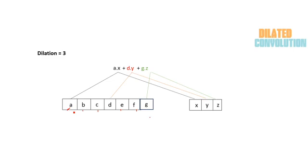Now we can see the key difference between normal convolution and dilated convolution. In normal convolution with dilation factor one, we find the relationship between adjacent pixels — for example, the interaction between a, b, and c. In dilated convolution, we are not interacting with immediately adjacent cells; instead, we skip elements in between. This helps capture long-range dependencies in the data.